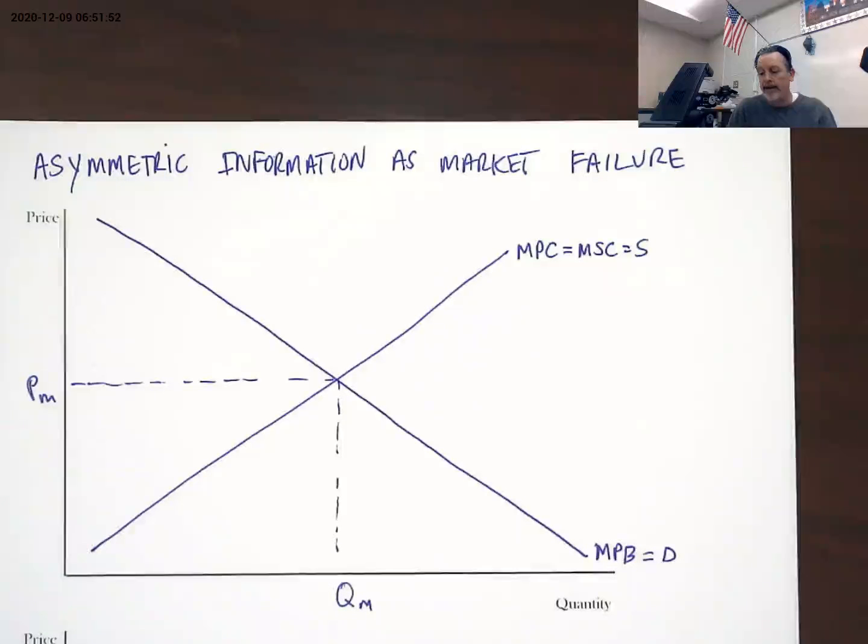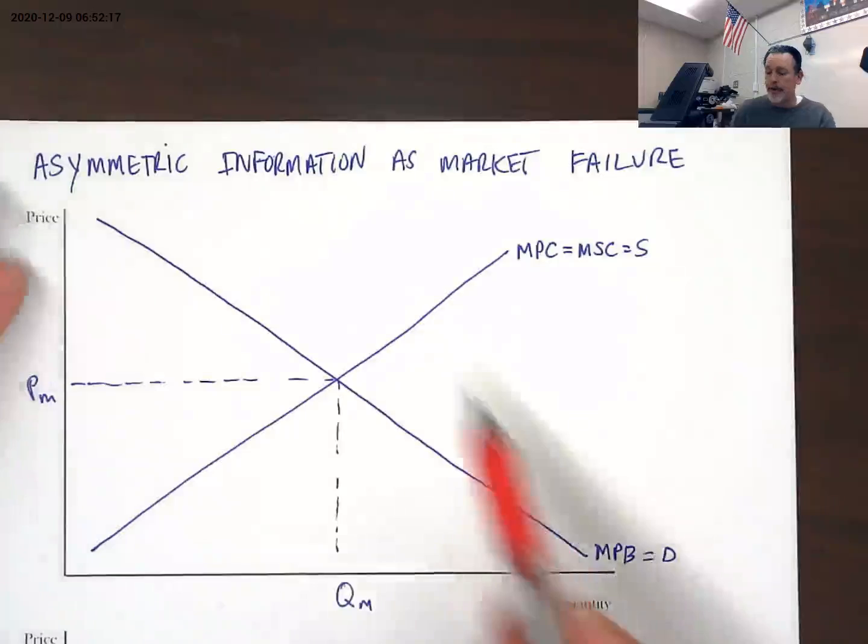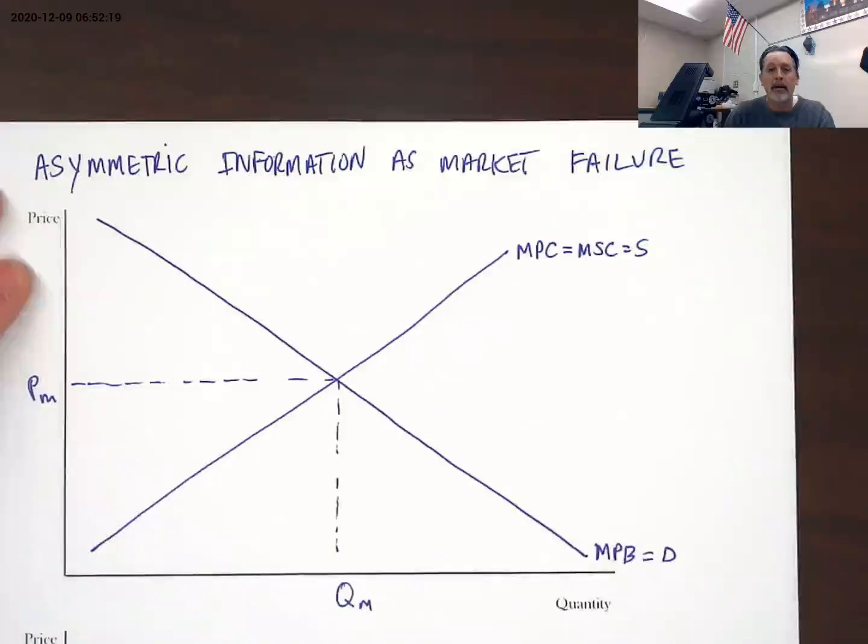One of the tenets and hallmarks of a perfectly competitive market system is the idea that everyone has full information. A market failure is when the price mechanism is not functioning properly and not allocating resources to the exact wishes and wants of private consumers and producers. That's what we see in our model.